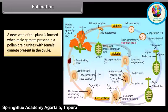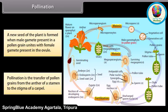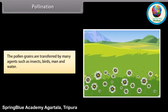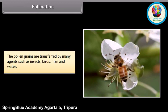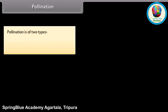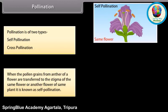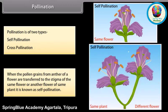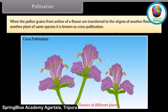A new seed of a plant is formed when the male gamete present in a pollen grain unites with the female gamete present in the ovule. Pollination is the transfer of pollen grains from the anther of a stamen to the stigma of a carpel. Pollen grains are transferred by many agents such as insects, birds, humans, and water. Pollination is of two types: self-pollination and cross-pollination. When pollen grains from the anther of a flower are transferred to the stigma of the same flower or another flower on the same plant, it is called self-pollination. When pollen grains are transferred to the stigma of a flower on another plant of the same species, it is called cross-pollination.